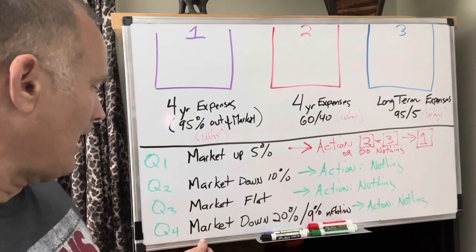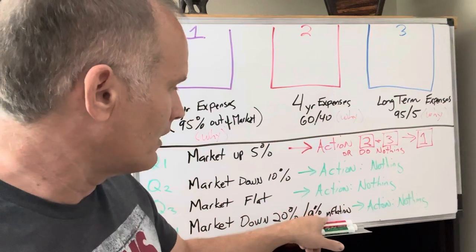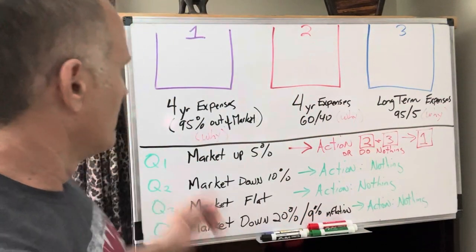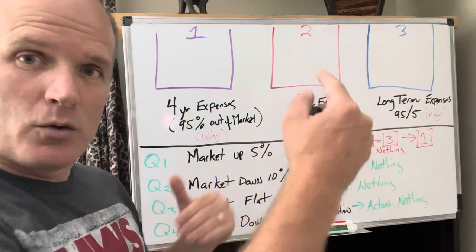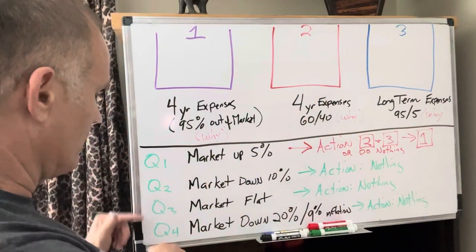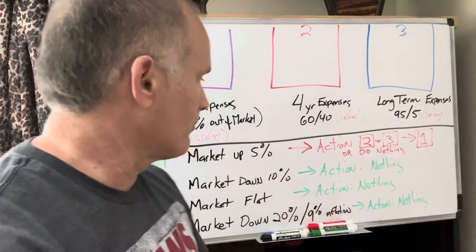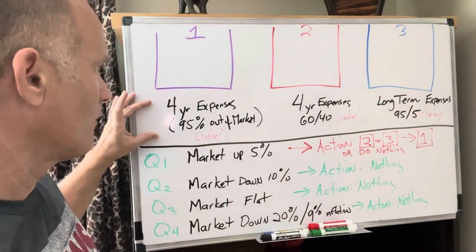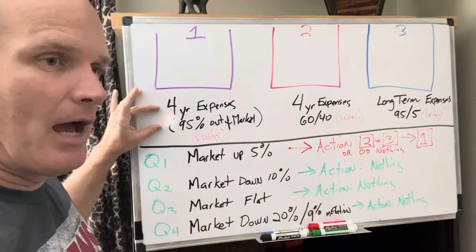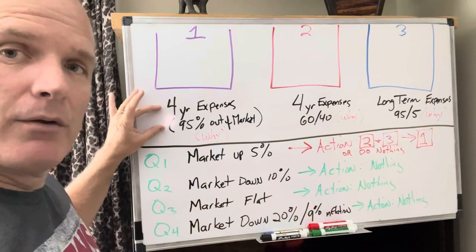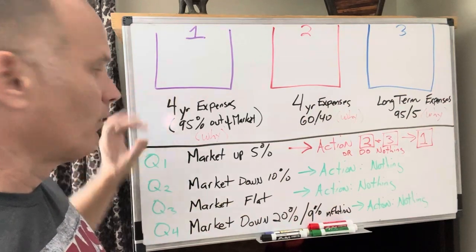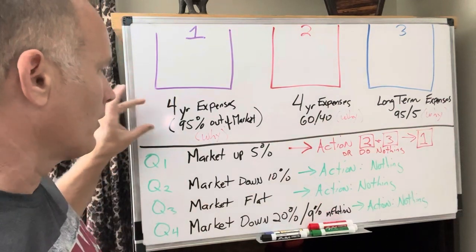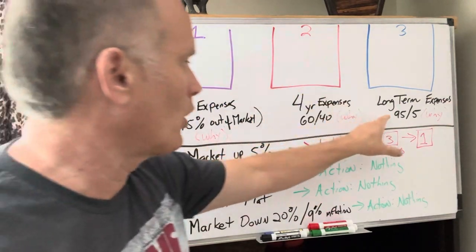The last one, market is down 20% and you got 9% inflation. Oh my gosh, what are you going to do? Action: do nothing. Now this four years is going to go down, not only from the expenses that you paid out, but also the 9% is going to impact your expenses over time. So this may have gone down a year, year and a half, when you only consumed maybe two quarters or three quarters worth of time. So remember, every bucket has its purpose.